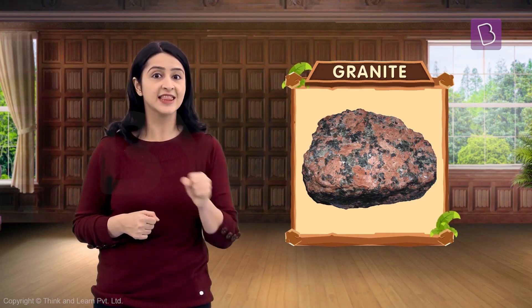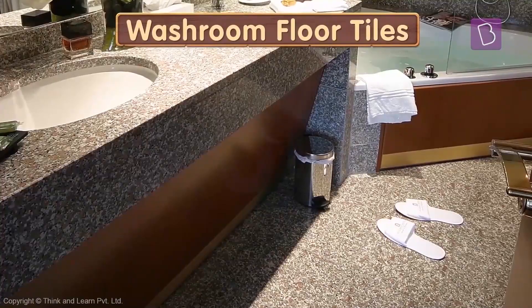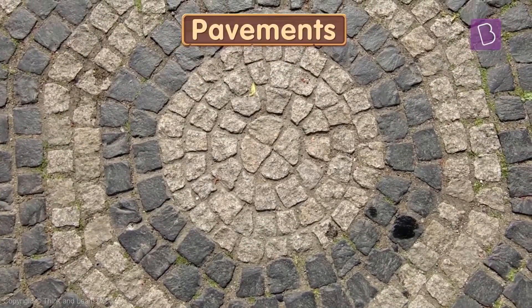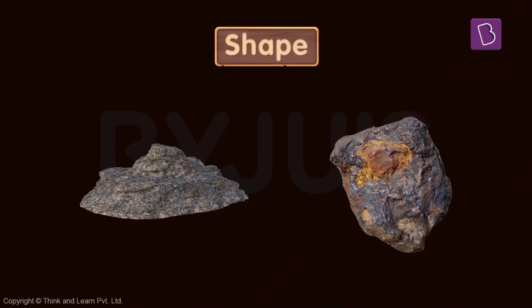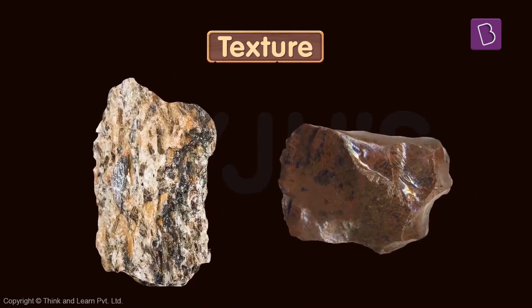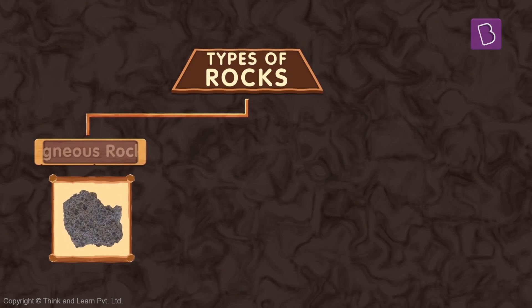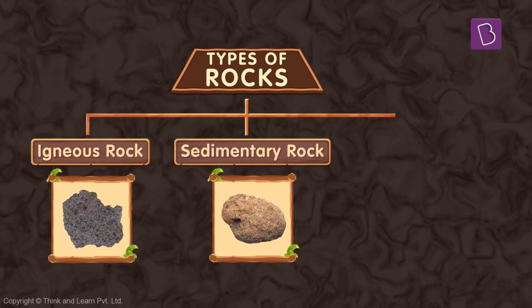I am sure you must have seen this particular rock in daily life — in your kitchen countertops, slab tiles in washrooms, pavements on city streets. Now you must have seen different kinds of rocks. They differ in shape, size, colour, and texture. So much variety! Studying all of them at once is pretty difficult. That's why we classify them into categories. On the basis of formation, rocks are classified into three categories: igneous, sedimentary, and metamorphic.